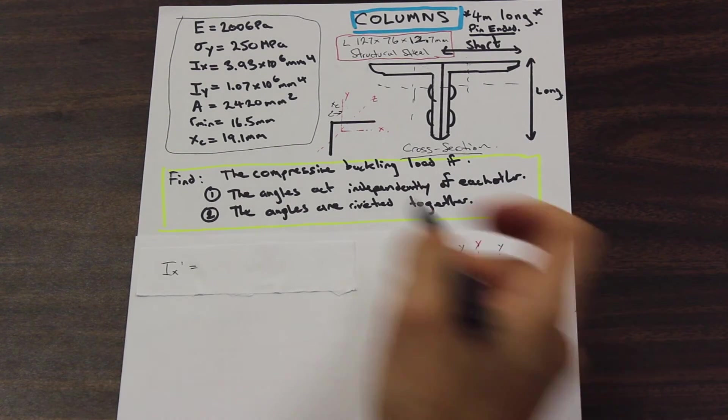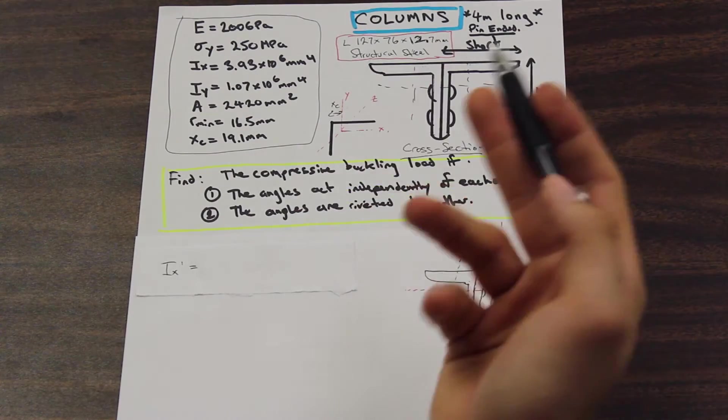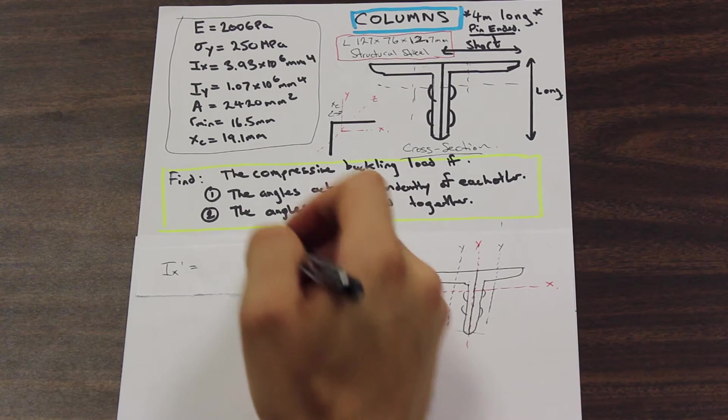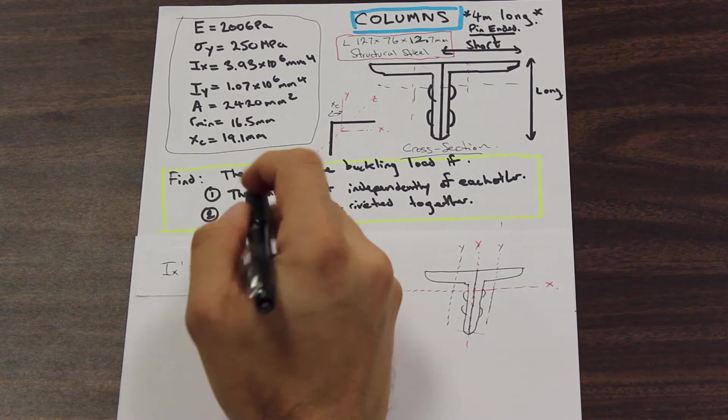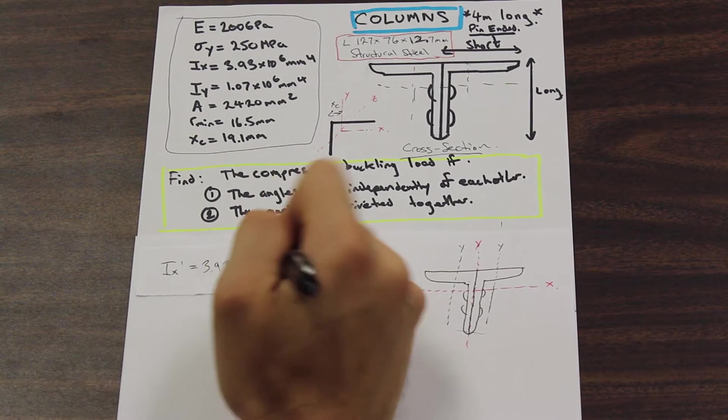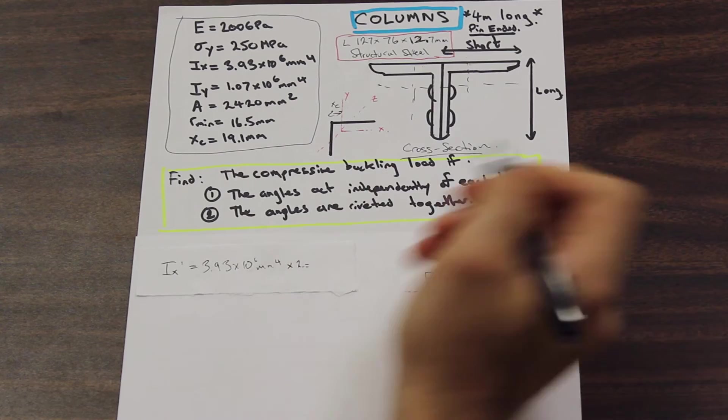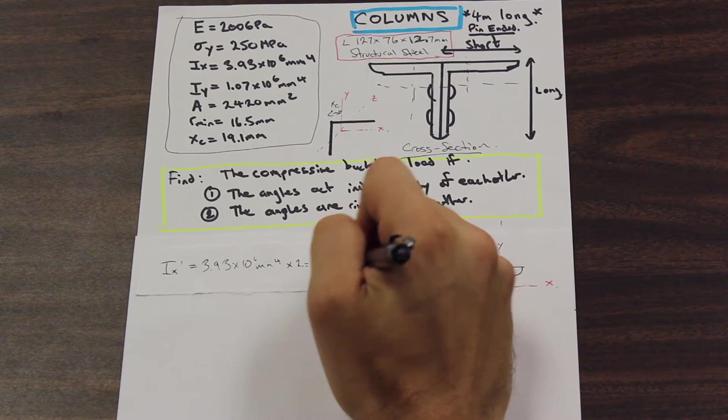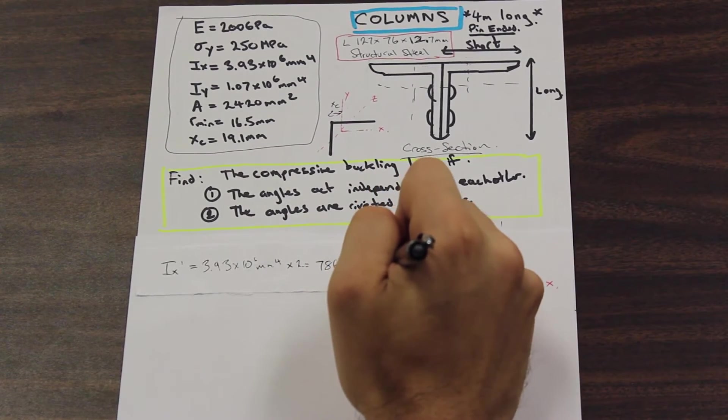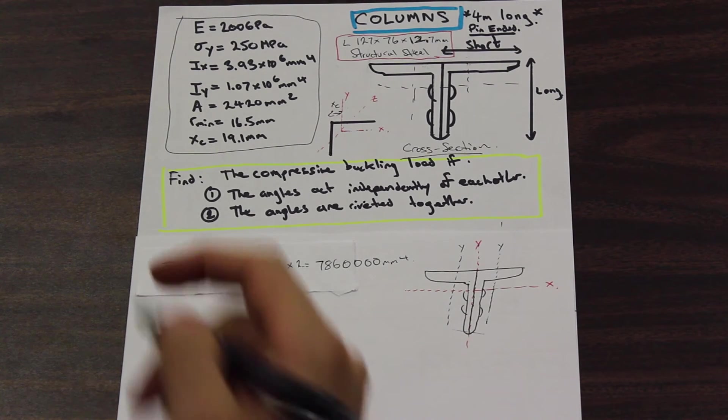All we need to do is just take our I_x that we were given, and we're just going to have to multiply that by 2, and that's going to give us our new moment of inertia in the x-axis. So we have 3.93 times 10 to the 6 millimeters to the 4th, and we're just going to multiply that by 2, and that should give us 7,850,000 millimeters to the 4th.